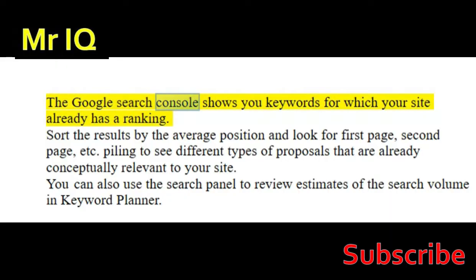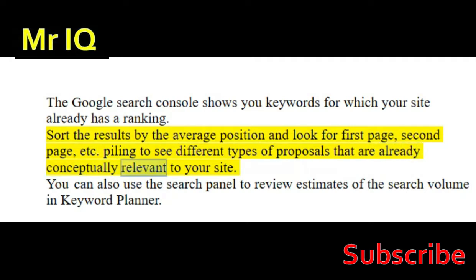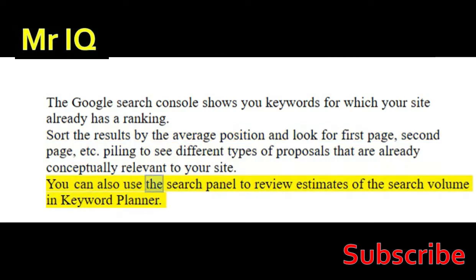The Google Search Console shows you keywords for which your site already has a ranking. Sort the results by the average position and look for first page, second page, and so on, to see different types of proposals that are already conceptually relevant to your site.